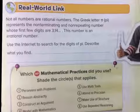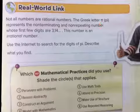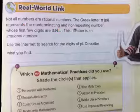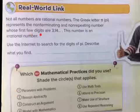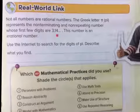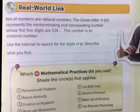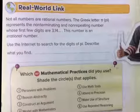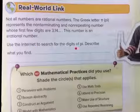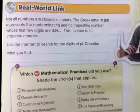Not all numbers are rational numbers. The Greek letter pi represents a non-terminating and non-repeating number whose first few digits are 3.14 and then it keeps going. This number is an irrational number — it never stops and it continues to be different, with absolutely no pattern to it. Use the internet to search for digits of pi and see what you find.